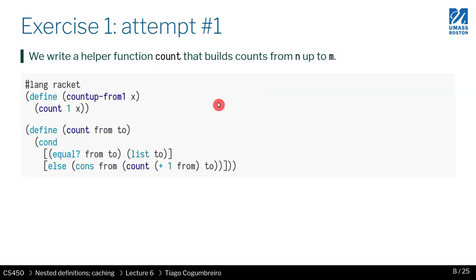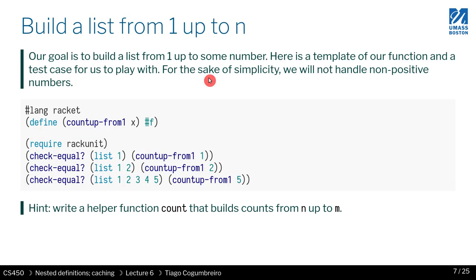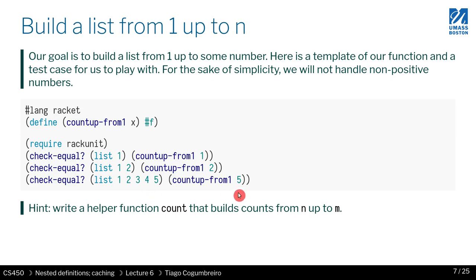The first thing we want to do is write a function that counts from 1 to x. So if we pass it 1 it should return a list with just 1, and if we pass it 2 it goes 1, 2, and if it's 5 it's 1, 2, 3, 4, 5.